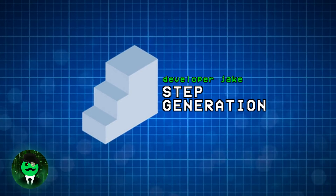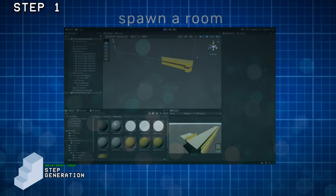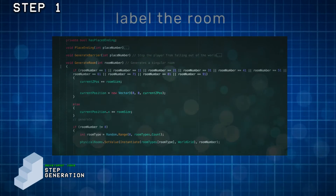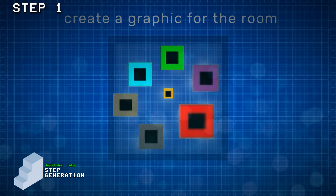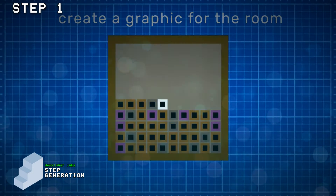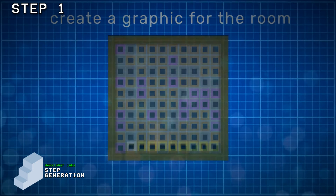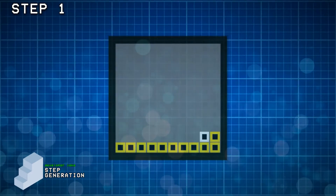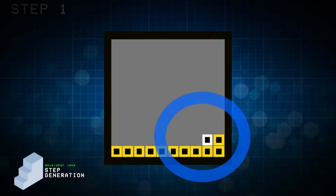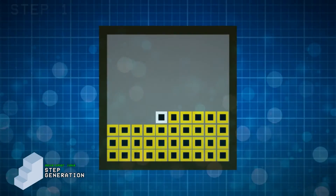At the surface, the first step of the step generation grid is spawning in an empty room, labeling those empty rooms, then creating the graphic on the grid that represents the given ID of the empty room. When this first step is completed, it spawns a new graphic that is white, meaning it's just an empty room with no lighting or added features.